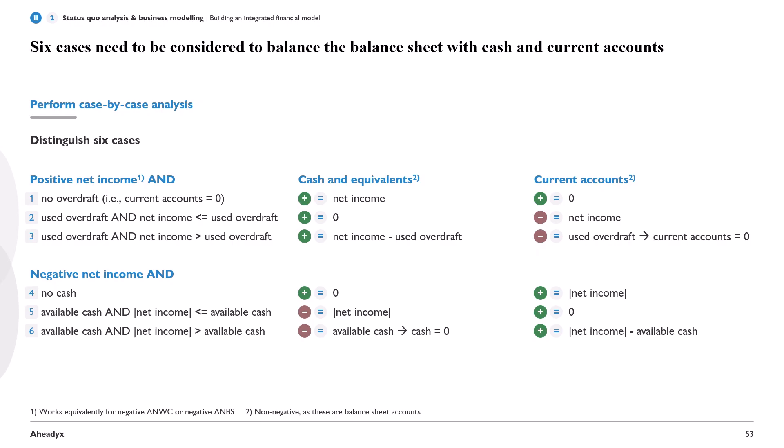There's a third case where net income is larger than the used overdraft. Now we can pay back the entire overdraft — or counter-accounts in this case — so this will go down to zero, and what's left goes up in cash and equivalents. They increase by net income minus the used overdraft — what's left of net income after paying back the counter-accounts.